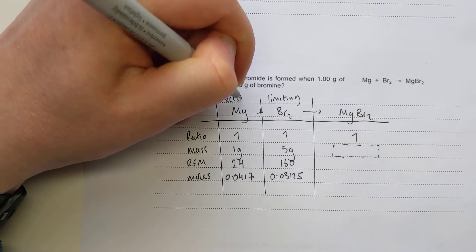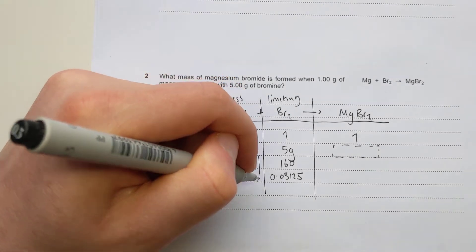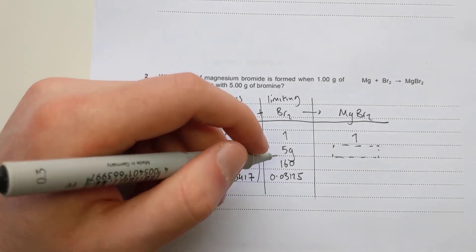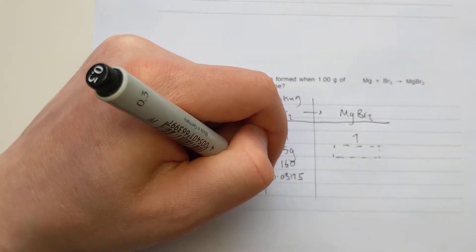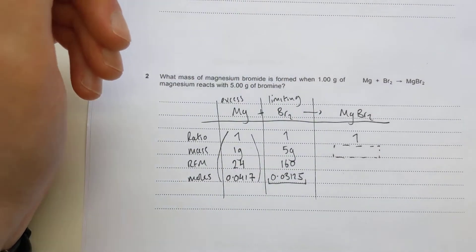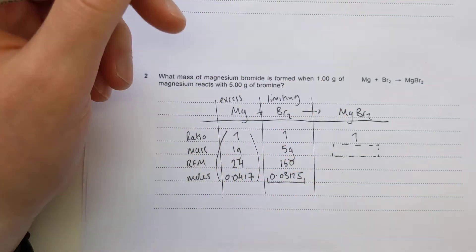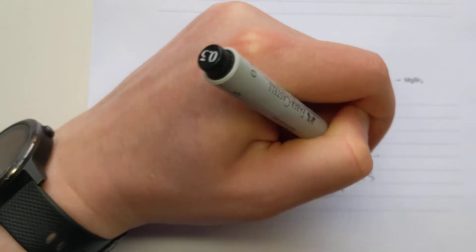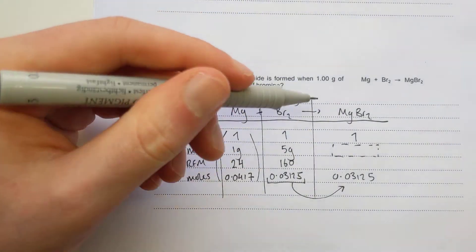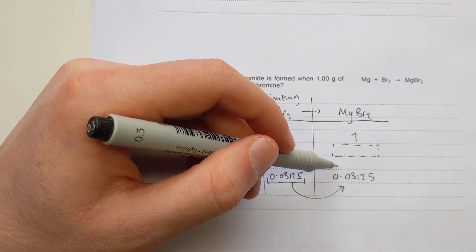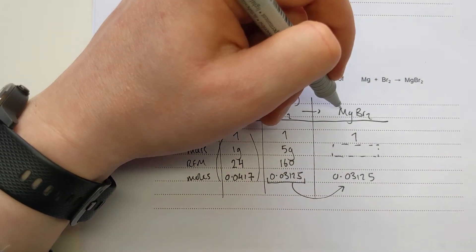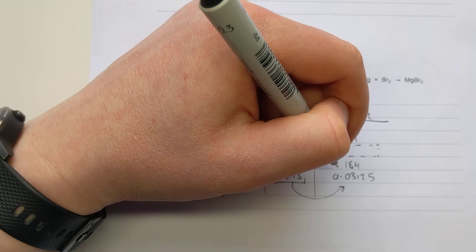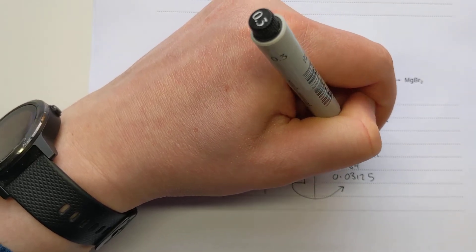The magnesium is in excess. I can ignore the excess reactant because it's going to be left over - not all of it reacts, but the bromine fully reacts and then the reaction stops. So this controls how much product I make. Number of moles is 0.03125, and it's a one-to-one ratio for bromine to magnesium bromide, so the moles are the same for both. Converting back to mass: RFM of magnesium bromide is 24 plus 80 plus 80, which is 184. 184 times 0.03125 gives a final answer of 5.75 grams.